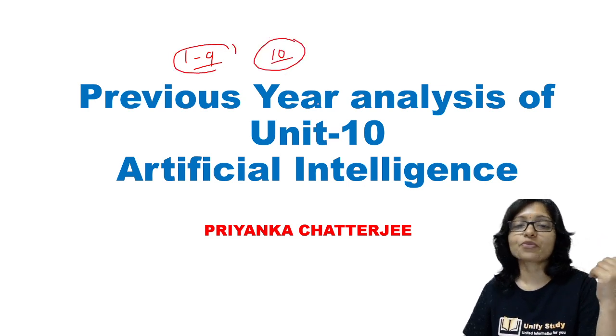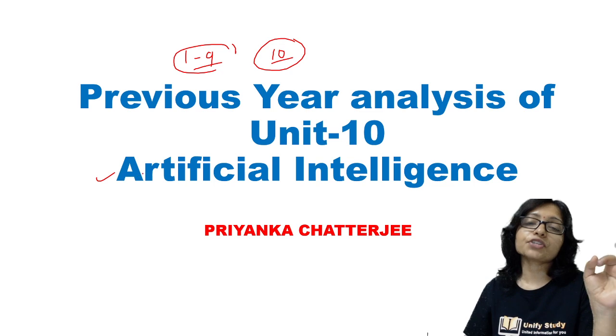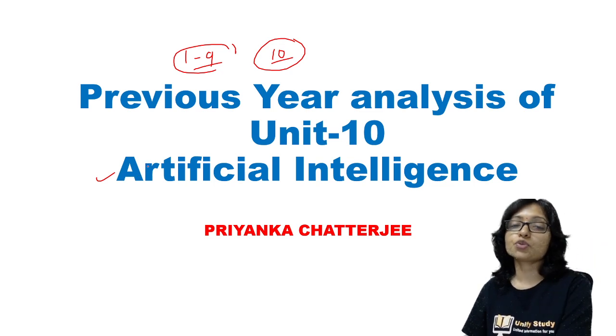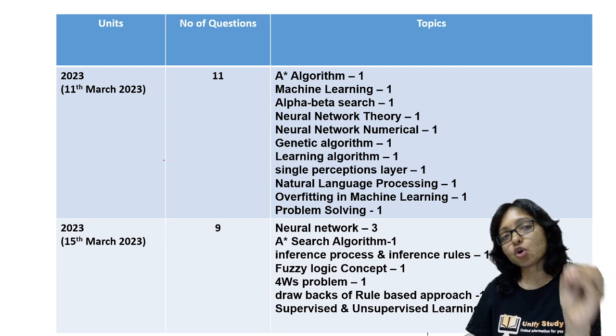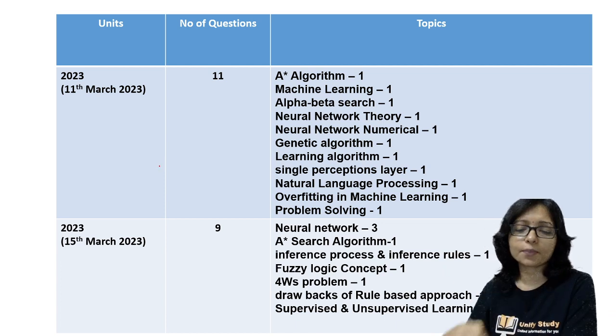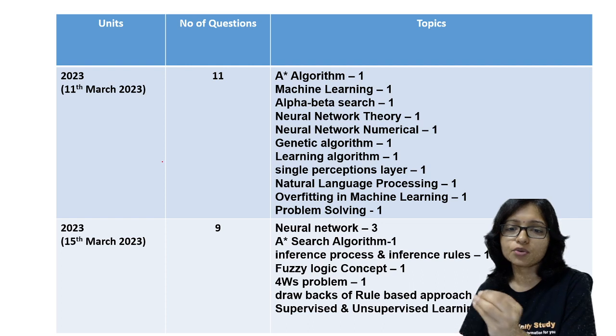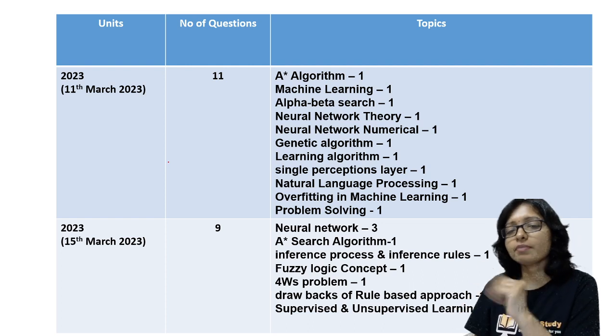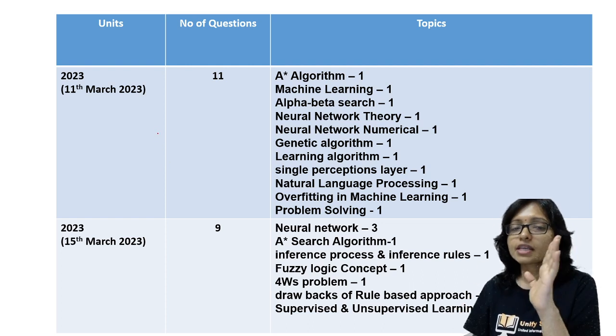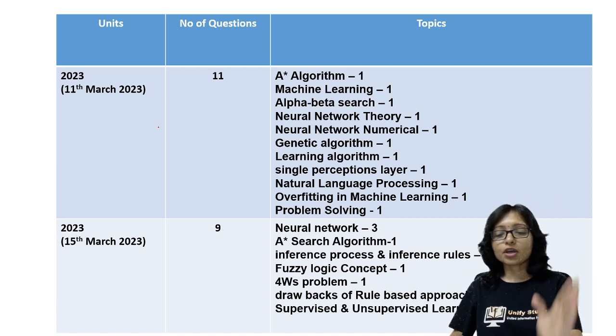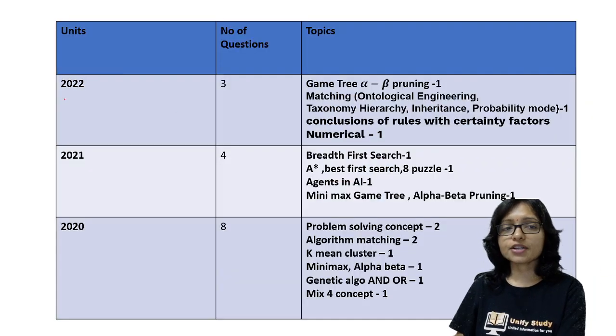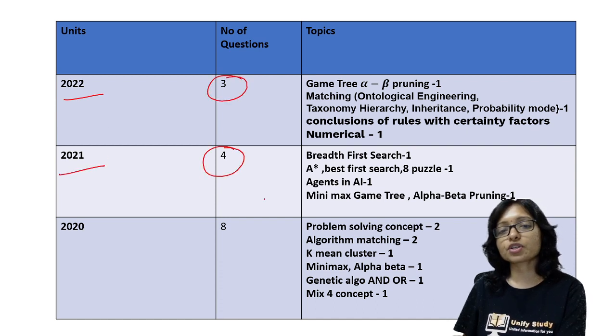That's why there were lots of queries coming. I did not upload artificial intelligence because I was taking time to analyze it completely. I thought that if I try to compare it with 2021 and 2022, it will be a big mistake because there is a big change in the pattern. Previously in 2022 and 2021 there were only 3 and 4 questions.